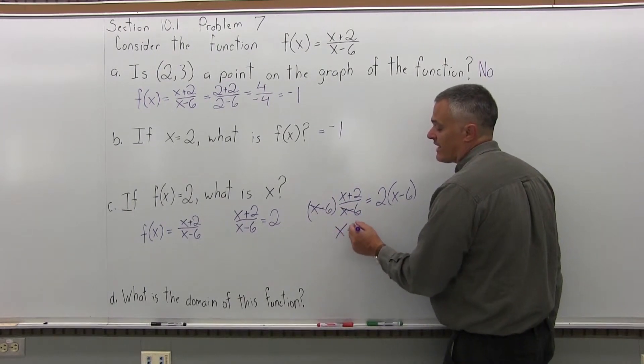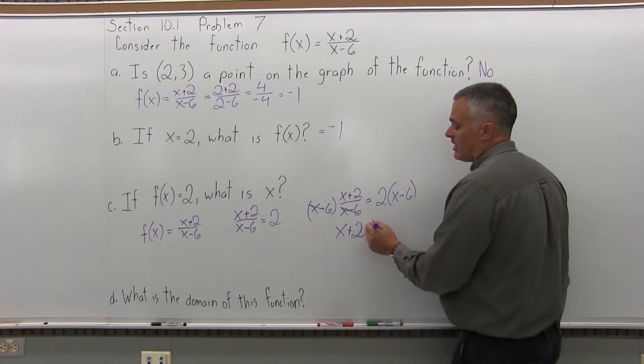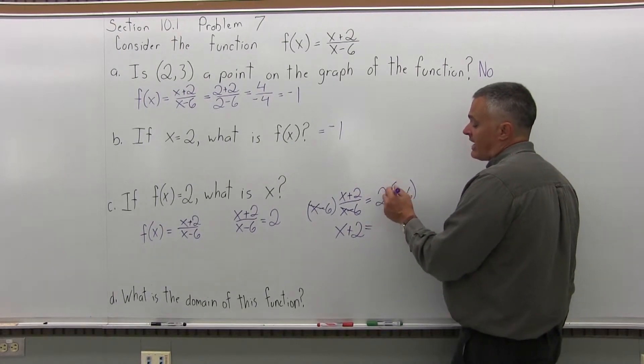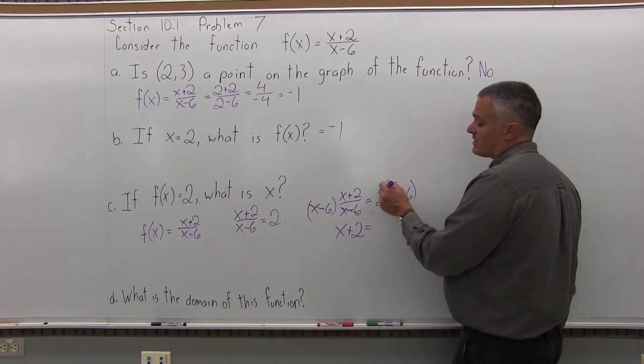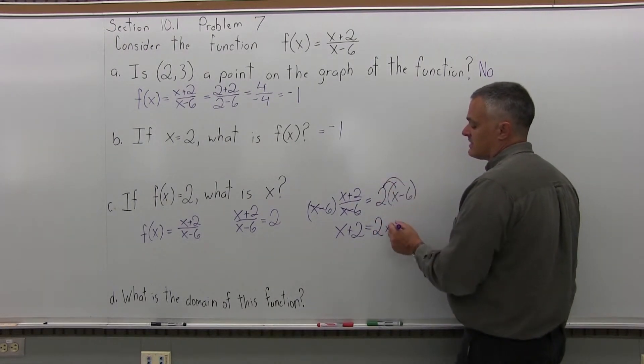And on the right side of the equation, I have 2 times, in parentheses, x minus 6. So I clear the parentheses. 2 times x is 2x. 2 times negative 6 is negative 12.